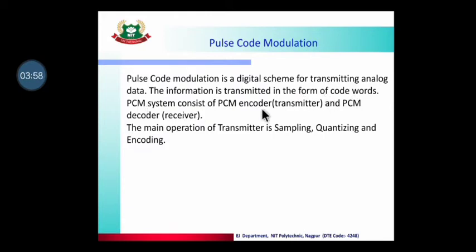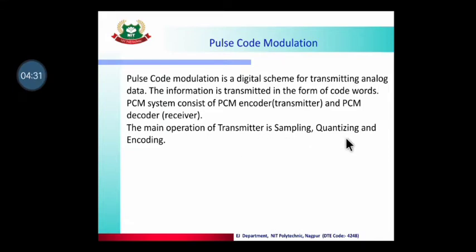We have also studied sampling. Sampling means taking the continuous wave and breaking it into parts — taking samples of the signal. We break the continuous signal into a number of parts. Quantizing means that among the many samples that represent a range of values, we assign a common value. For example, one sample's height is 5V, another is 5.1V, another is 5.2V.